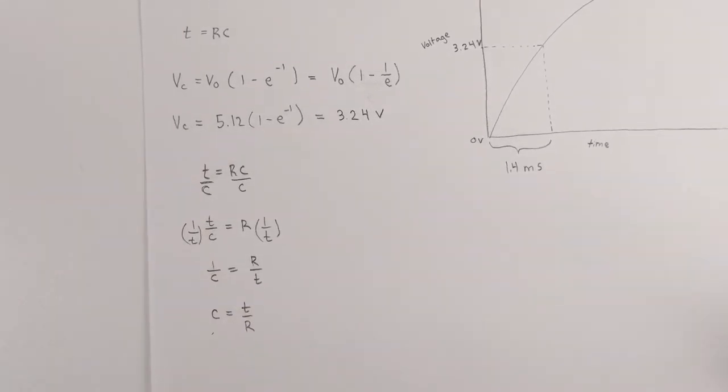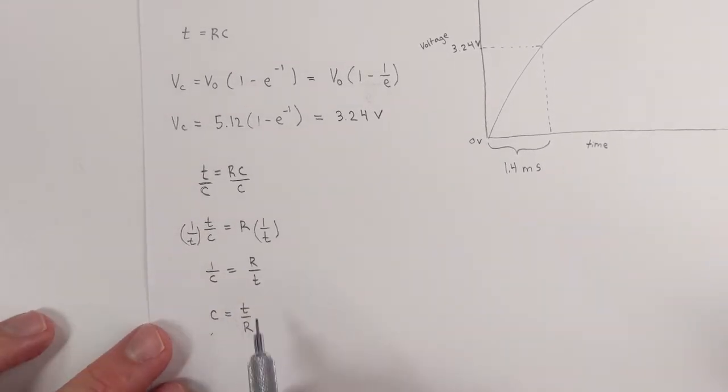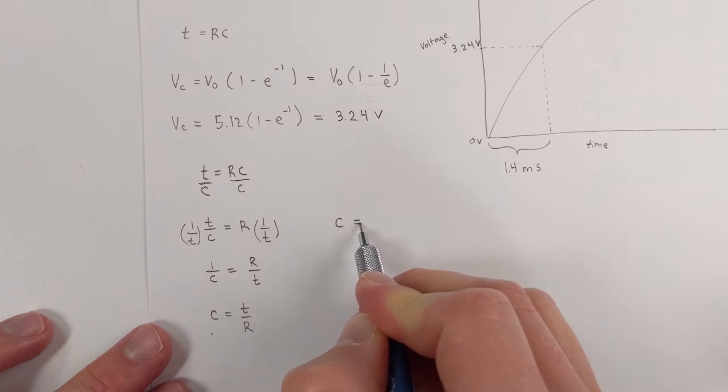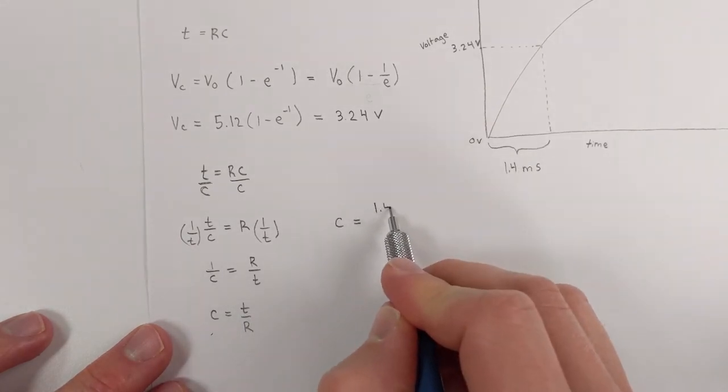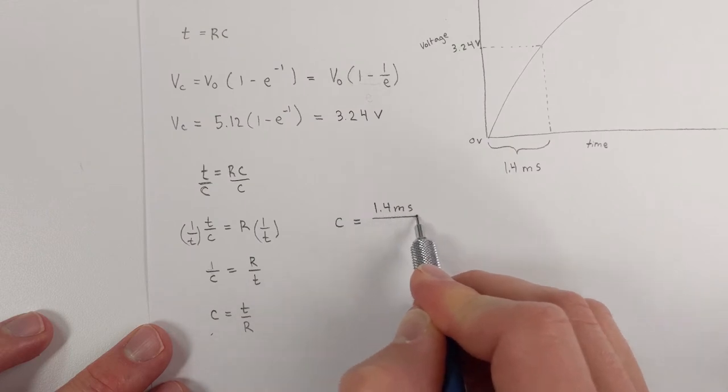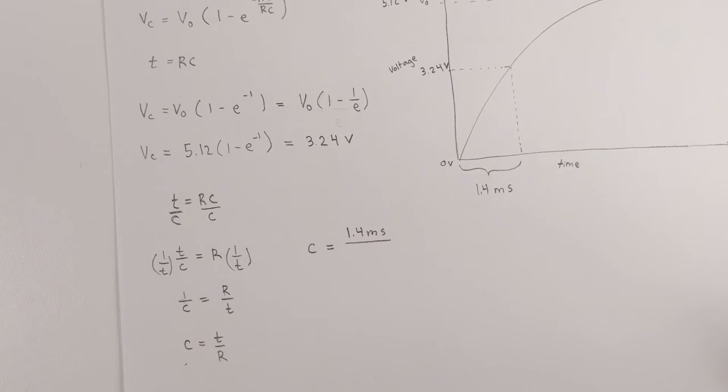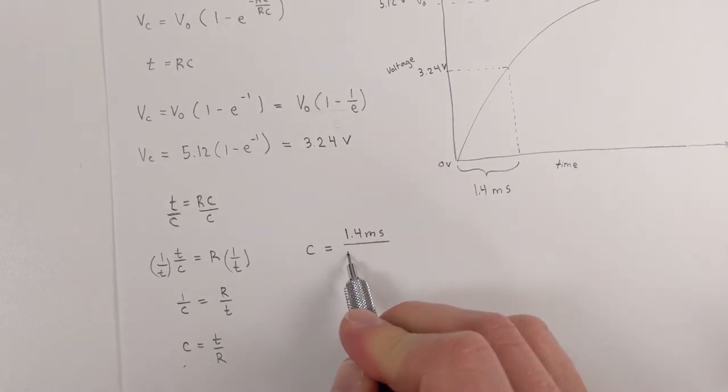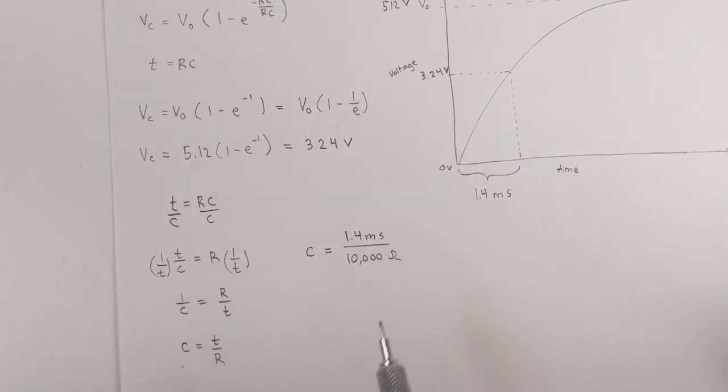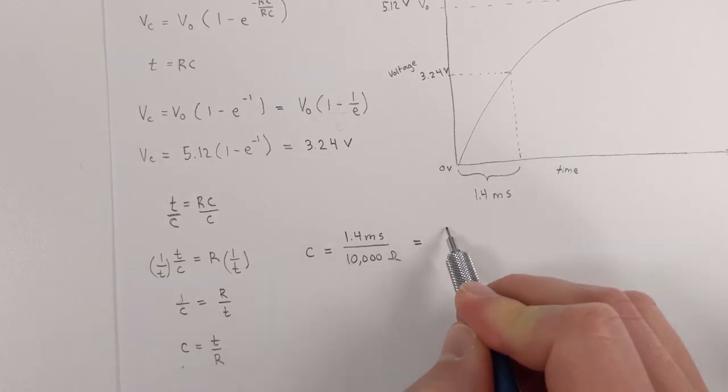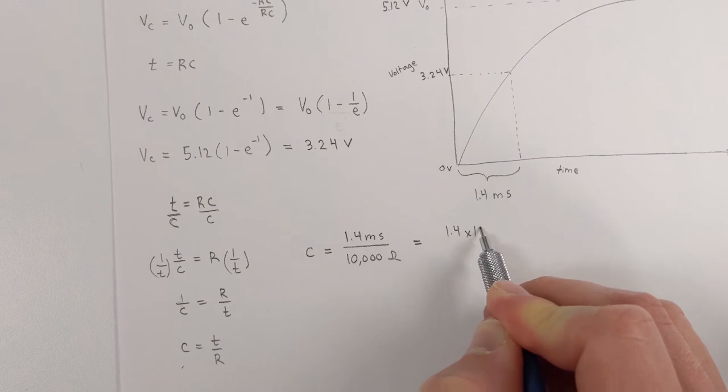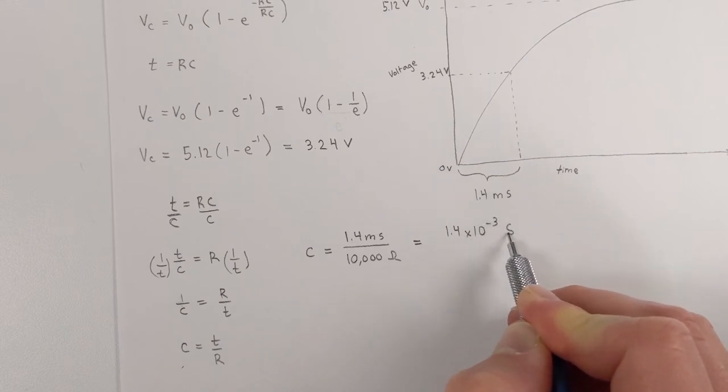Okay, there's many different ways you can do that, but that's how I did it. And so C is equal to our time, 1.4 milliseconds, divided by our resistance. Now if you remember back, our resistance was 10,000 ohms. So I'm just going to do 10,000 ohms. Now you've got to make sure here that you have this in seconds and then this is in ohms. So I've got to rearrange this. I've got to do 1.4 times 10 to the negative 3 seconds.